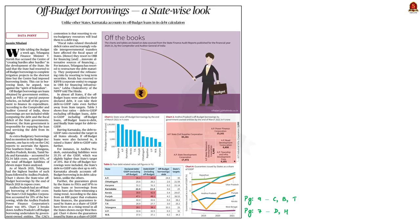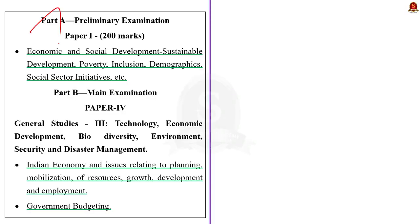Let us take up this data point from yesterday's newspaper. This data point highlights the rising trend of off-budget borrowing by the states. In our discussion today we will see what are off-budget borrowings, the role of off-budget borrowings, and the important data mentioned in the news article. The syllabus regarding this discussion is highlighted — you can pause the video and go through it.